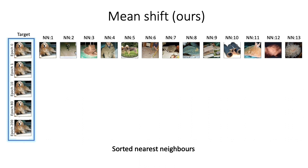Let's now try to visualize the behavior of our method as training progresses. The first column is the target view, which is used to find the nearest neighbors. The rest of the columns are the nearest neighbors sorted by their distance to the target. At epoch 0, the model is randomly initialized. We can see that although the NNs are not semantically related to the query, they are still closer in terms of low-level features — for example, most images have similar color as the target.